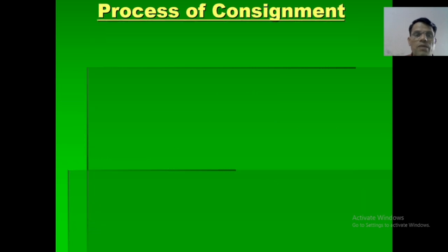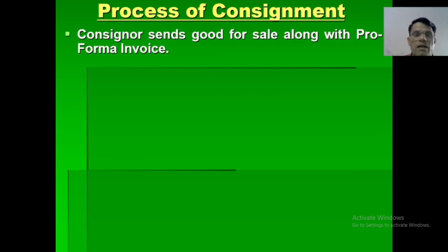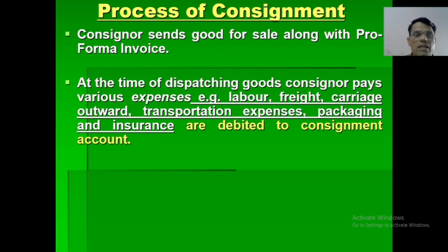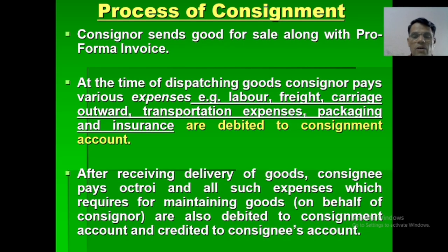Valuation of closing stock. Process of consignment: the consignor sends goods for sale along with a proforma invoice. At the time of dispatching goods, the consignor pays various expenses — for example, labour, freight, cartage, transportation, packaging, and insurance — which are debited to the consignment account. After receiving delivery of goods, the consignee pays octroi and all such expenses required for maintaining goods on behalf of the consignor, which are also debited to the consignment account and credited to the consignee account.